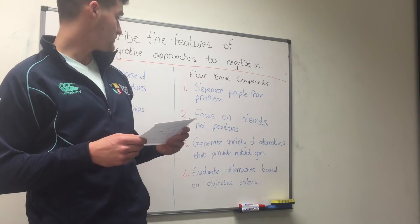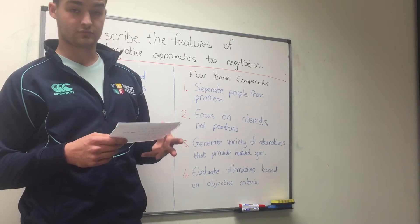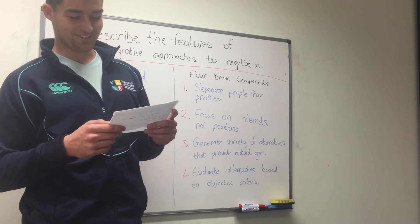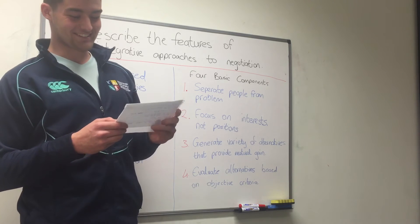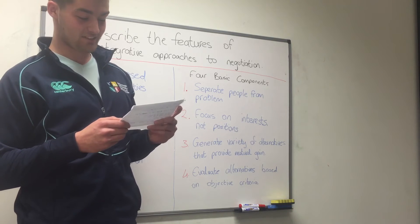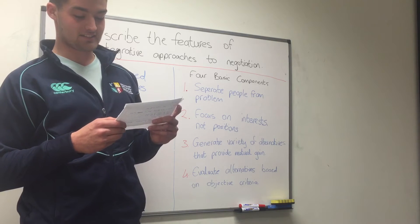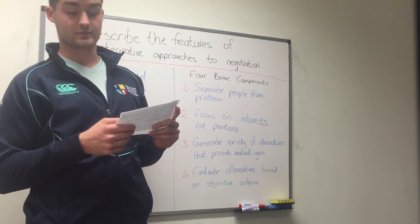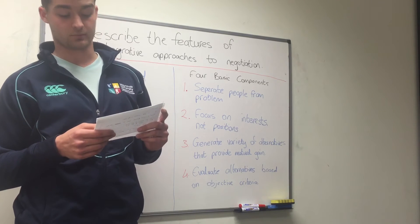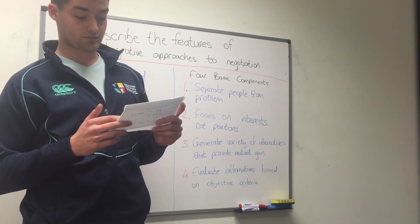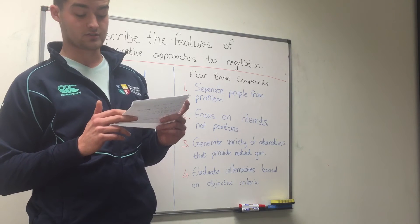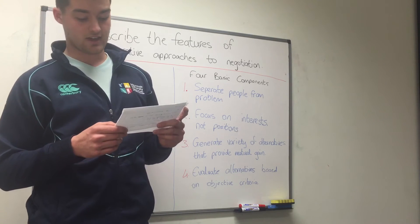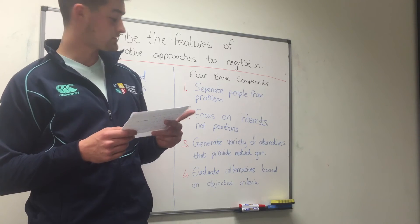In terms of focusing on interests and not positions, there are four main points that Fisher and Ury pointed out. The first is substantive interest — needs that relate to a material outcome. Then there's relationship interest, which is to deal with the ongoing relationship with the other party. There's process interest, which concerns the negotiation process itself, and then interest principles, which are concerns about what is ethical and just.